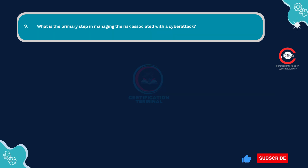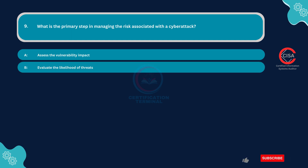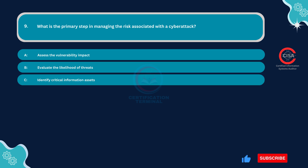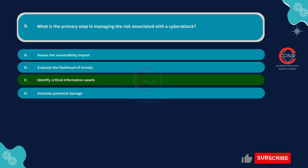Question number nine: What is the primary step in managing the risk associated with a cyber attack? Option A: Assess the vulnerability impact. Option B: Evaluate the likelihood of threats. Option C: Identify critical information assets. Option D: Estimate potential damage. The correct answer is Option C — identify critical information assets.